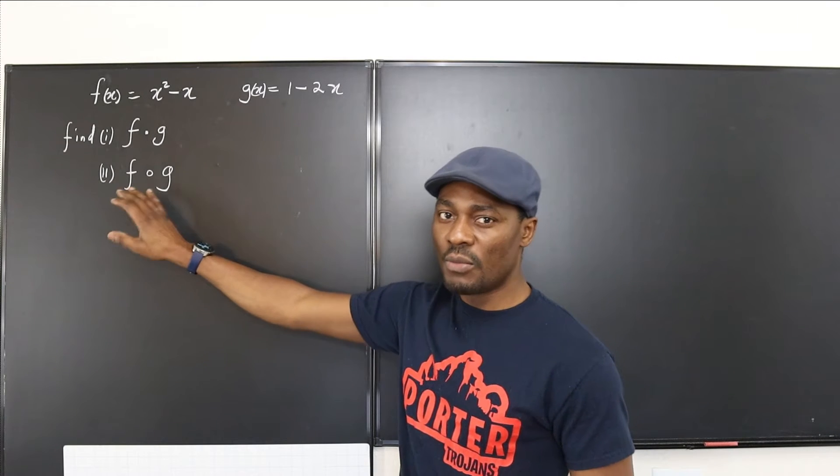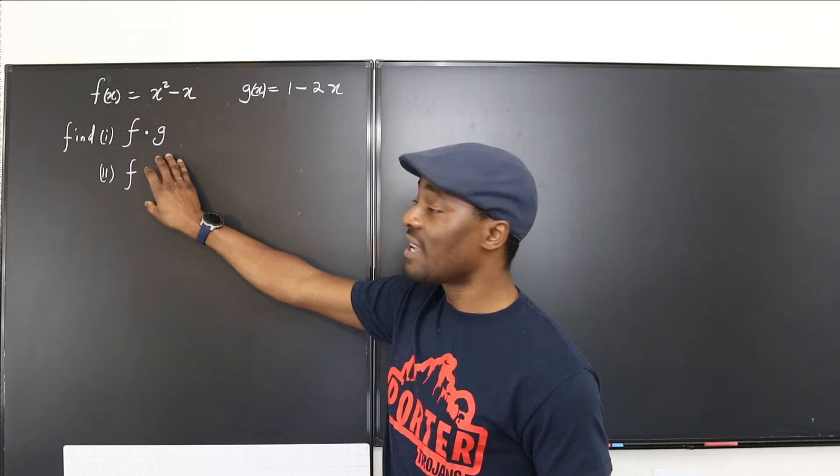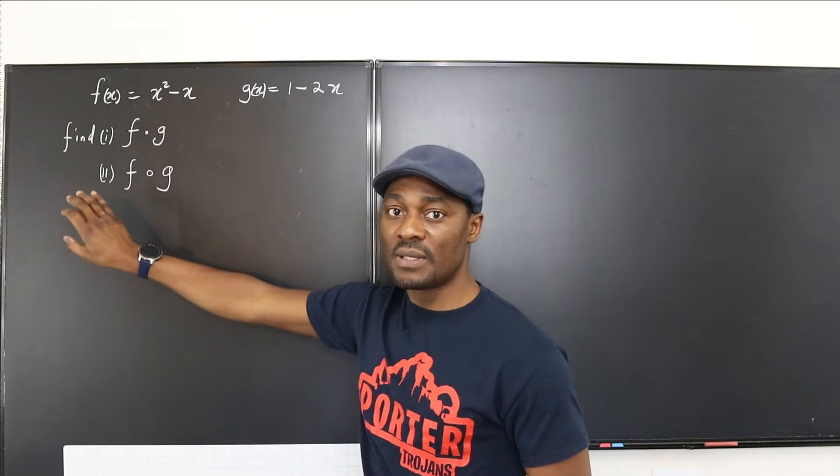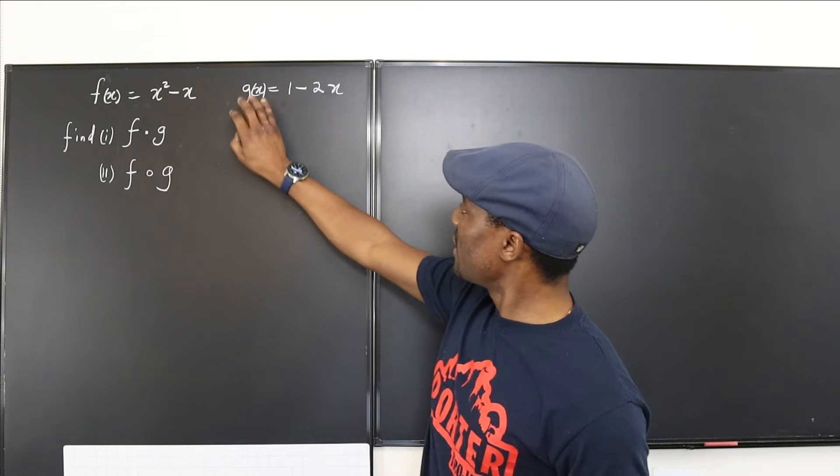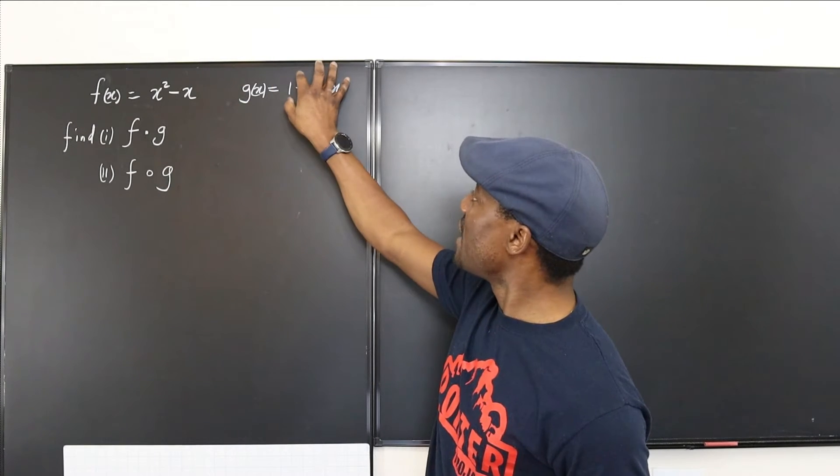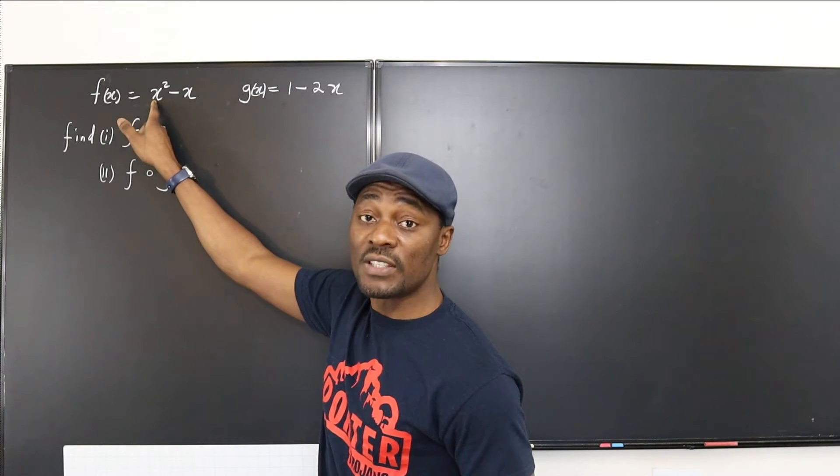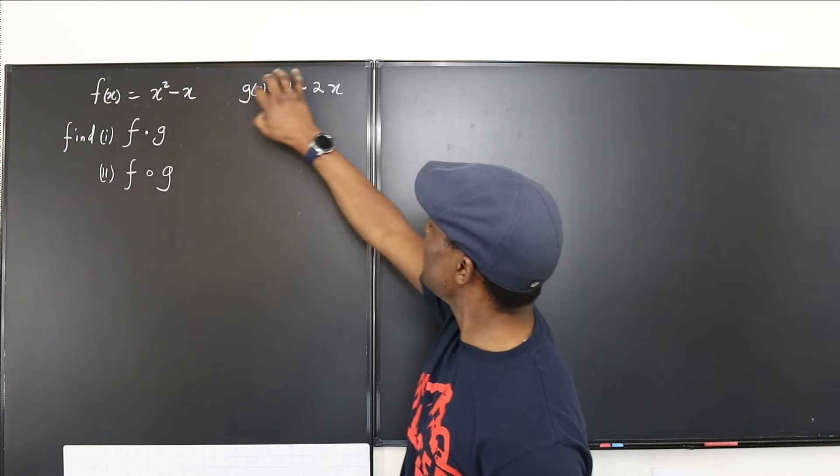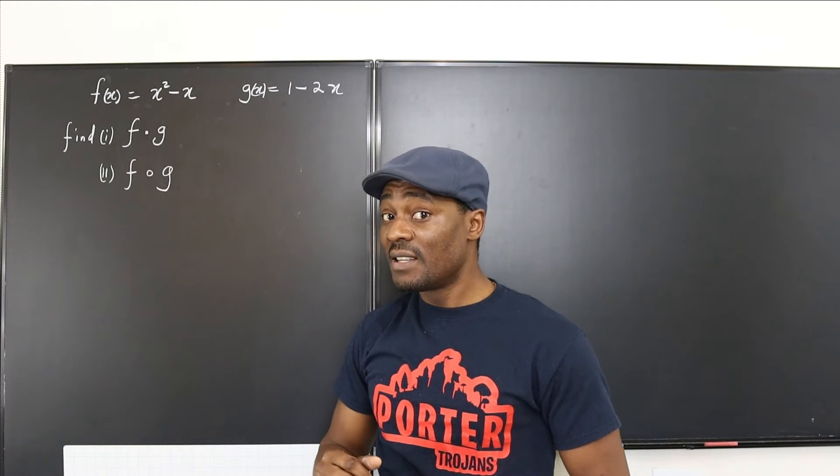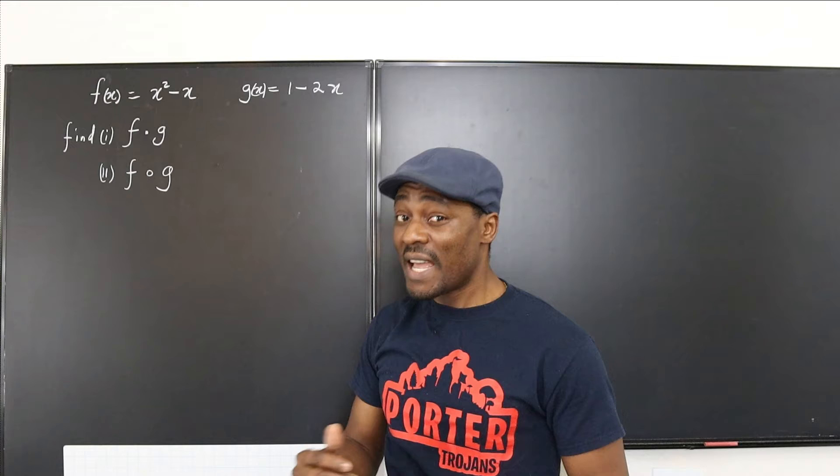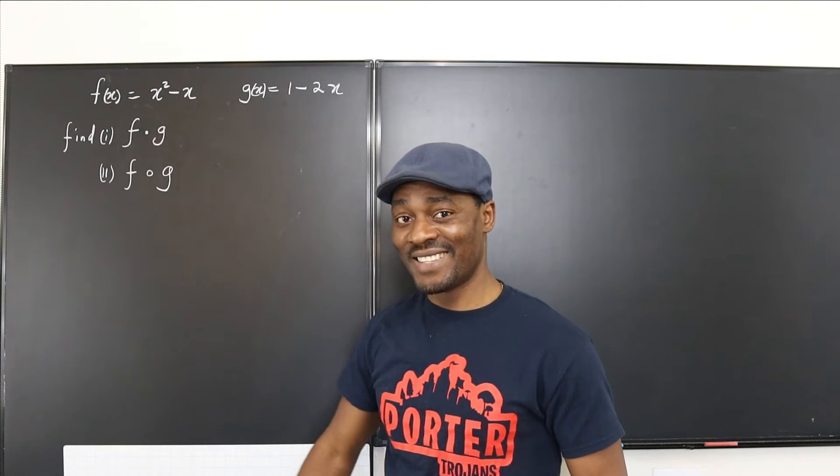What about the second one? Are you multiplying? No. You're actually making the second function the input for the first function. So you're going to say what comes out of g of x is 1 minus 2x. So now I'm going to take 1 minus 2x and make it the input. So instead of using just x, I'm going to be using the whole of the output from g of x. And as you can see, it is not likely that you're going to get the same result. But we're going to try it out. So let's get into it.